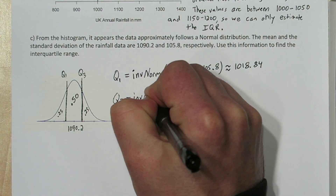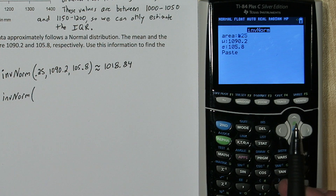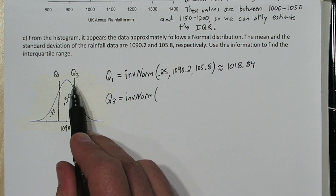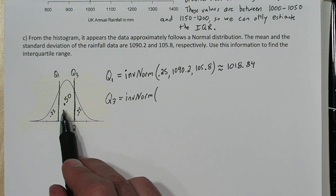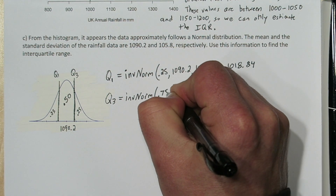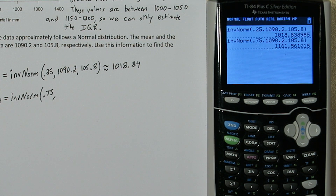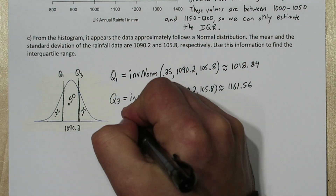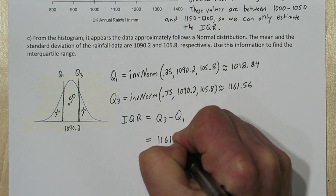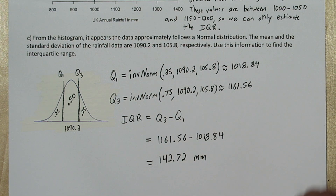To find quartile three, we're going to do the exact same thing, except for area we need to put in 0.75. That's because to the left of quartile three is the middle 50% plus the lower 25%, so it's a total of 75%. Everything else we keep the same, and so our quartile three is approximately 1161.56. So interquartile range is quartile three minus quartile one. Our IQR is 142.72 millimeters.